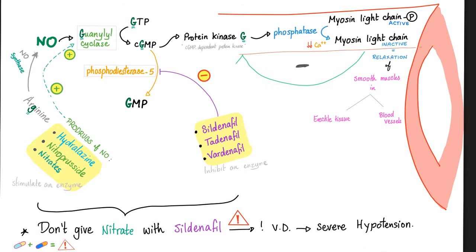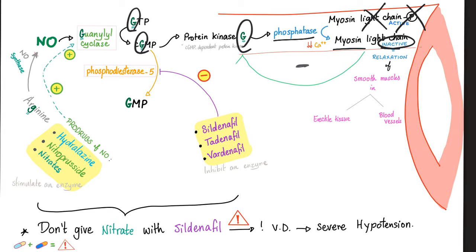We've talked about cyclic AMP — now briefly about cyclic GMP, which is very similar. GTP → cyclic GMP → protein kinase G → stimulates phosphatase. Phosphatase removes the phosphate from myosin light chain, making it inactive. Inactive myosin light chain equals relaxation in smooth muscles, in erectile tissue, and in blood vessels. That's why GTP and cyclic GMP dilate your blood vessel.